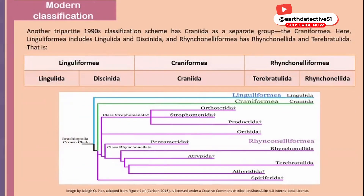Modern classification divides Brachiopoda into three groups: Linguliformea, Craniiformea, and a third group. The craniiform group has further subgroups within modern classification.